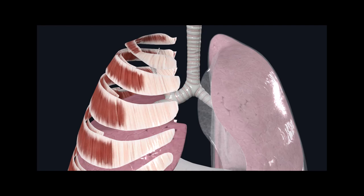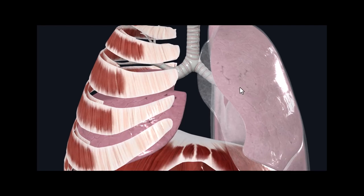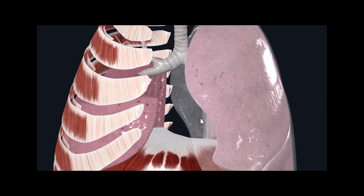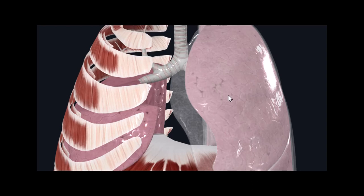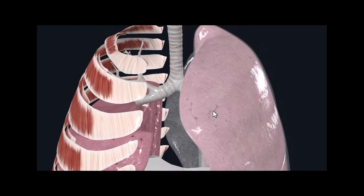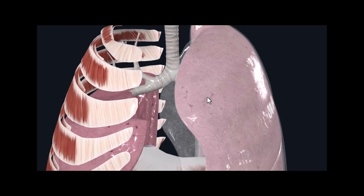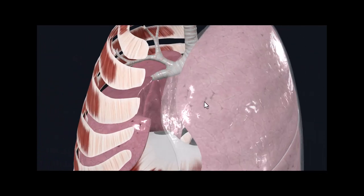Each lung is entrapped — it's closed — by a membrane similar to that of the heart. So the heart was enclosed by a bag called the pericardium. The lungs are enclosed by a bag that is called the pleura. So the pleura surround the lungs.